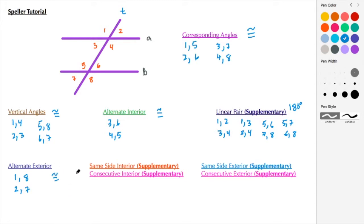Next we have same side interior and consecutive interior, just two ways of saying the same thing. When you add those together they have a sum of 180 degrees. Same side interior would be 4 and 6, and also 3 and 5.